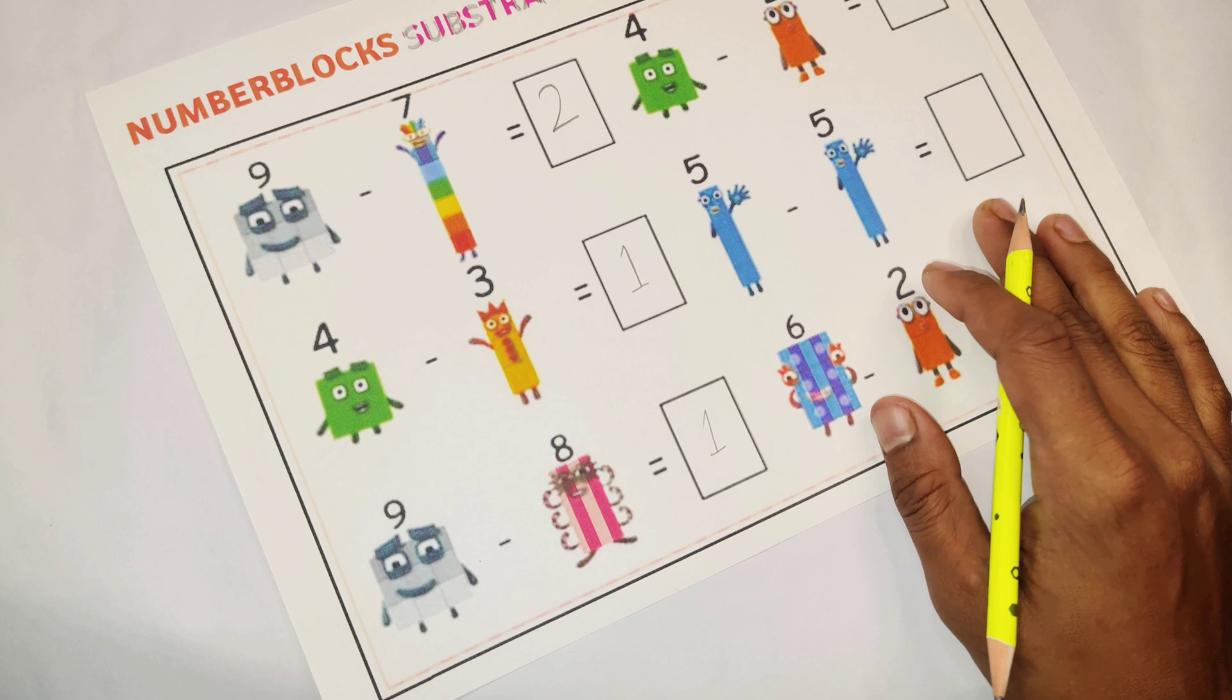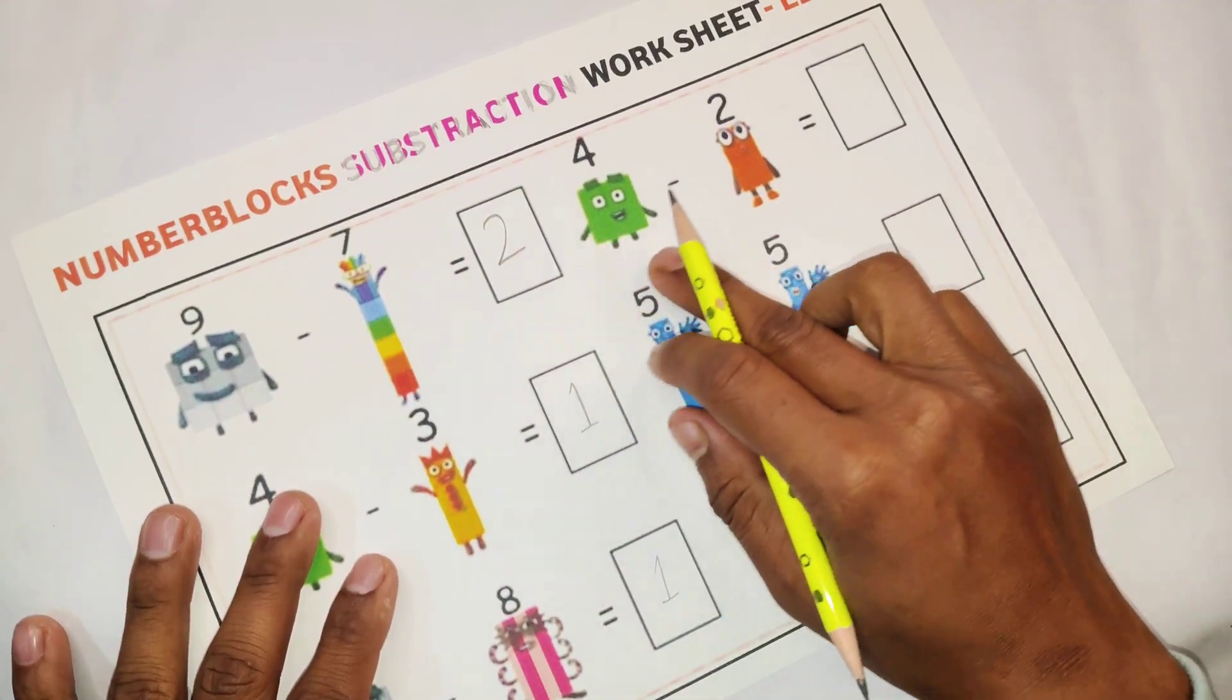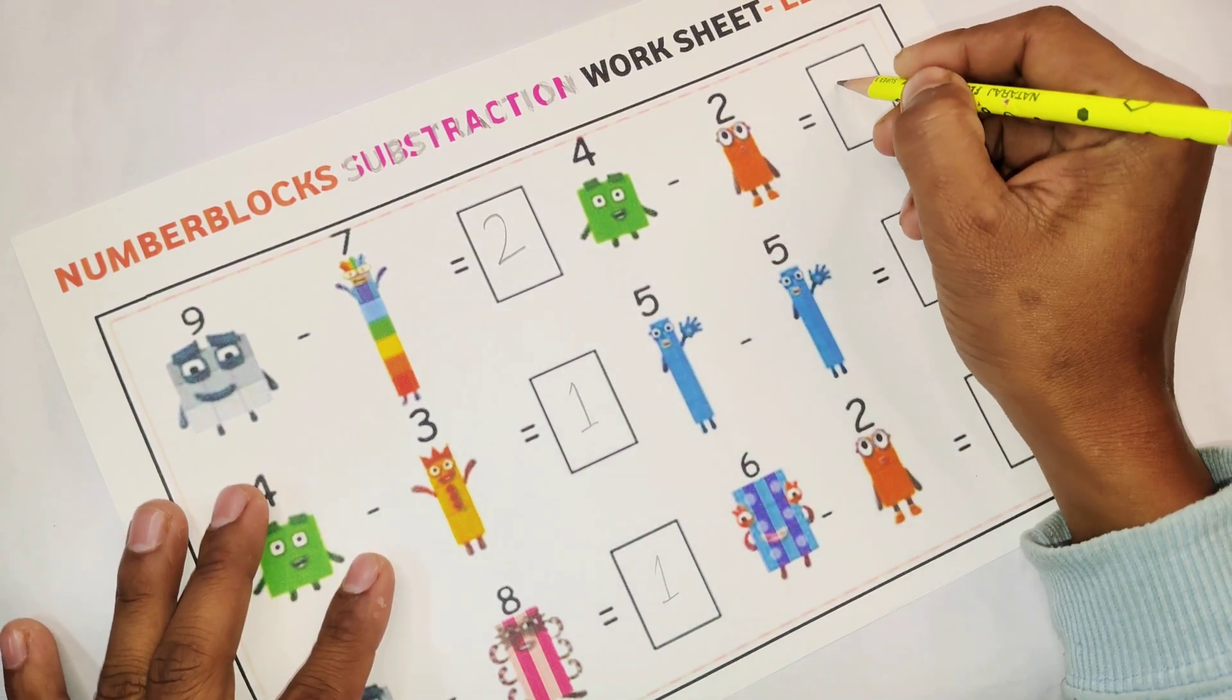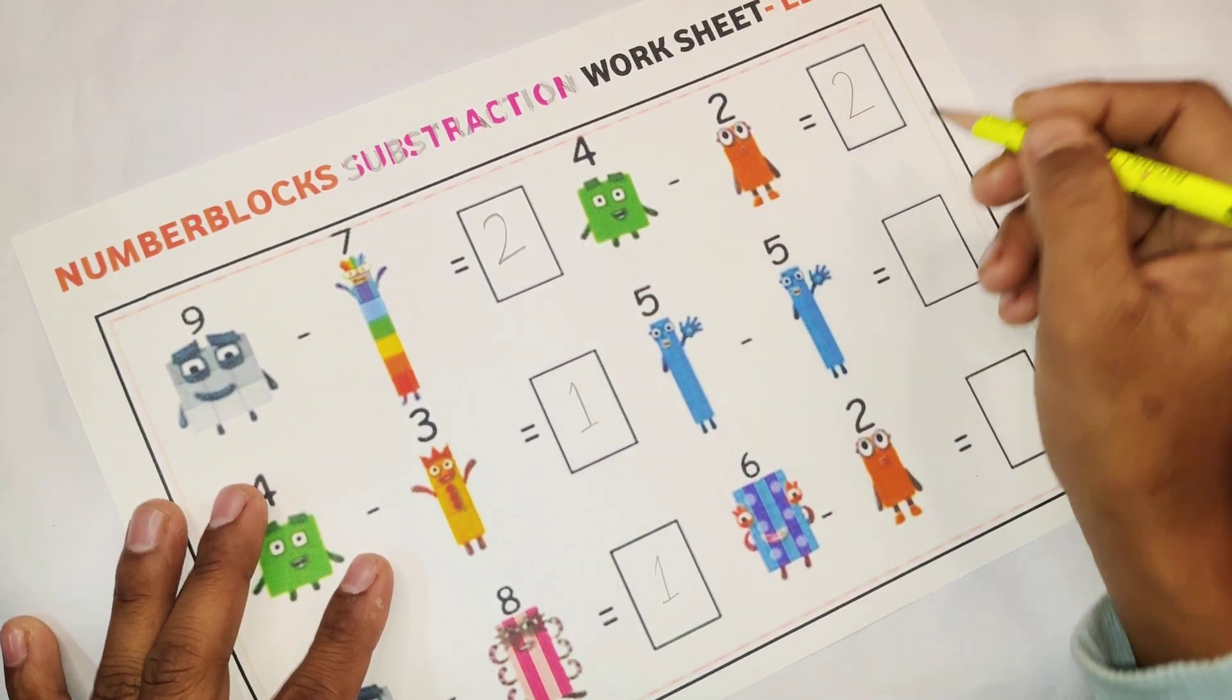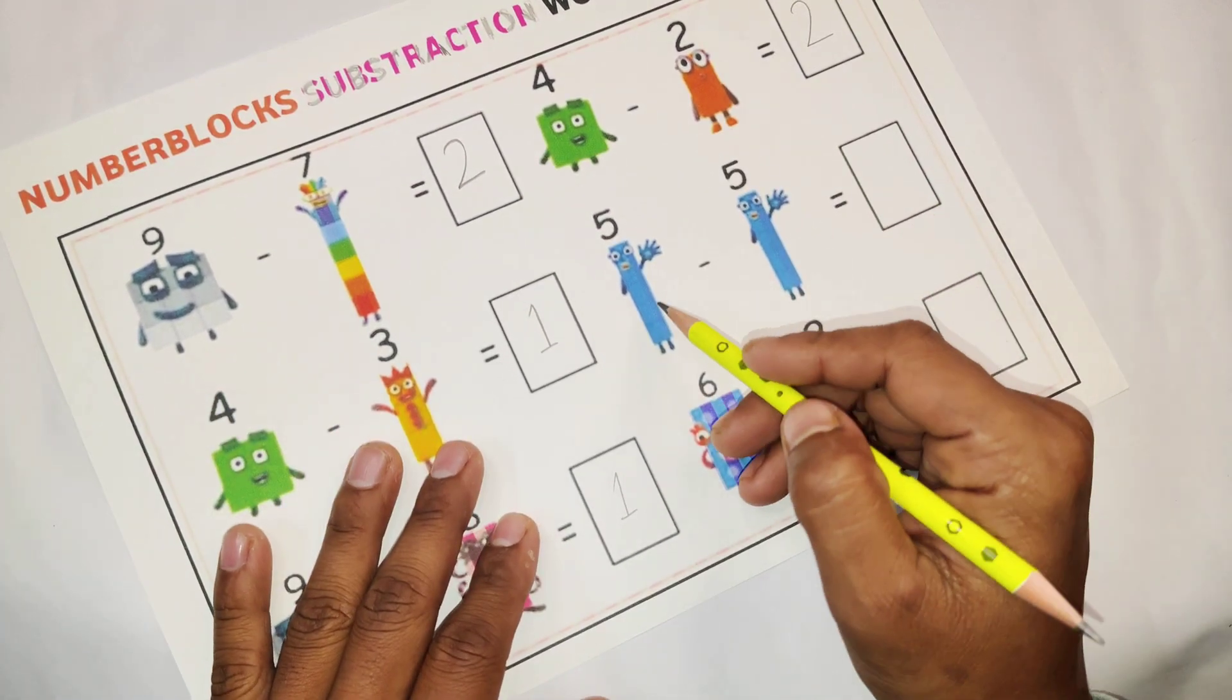Our next subtraction, 4 minus 2. This is very easy. 4 minus 2 is equal to 2.